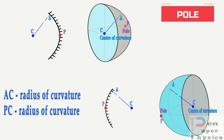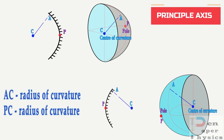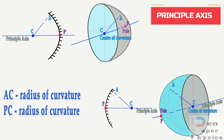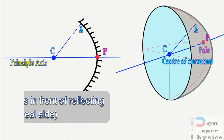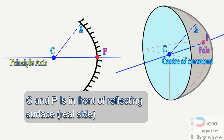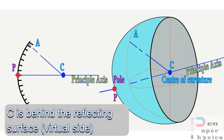The pole is the geometrical center of the spherical surface of the mirror and it is the only part that lies on the surface of the mirror. The principal axis is the imaginary line that passes through the center of curvature and the pole of the mirror. In case of a concave mirror, both C and P lie in front of the reflecting surface — on the real side. In case of a convex mirror, C lies behind the mirror on the virtual side.